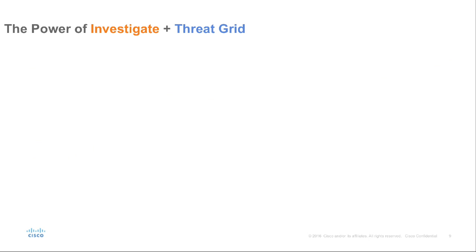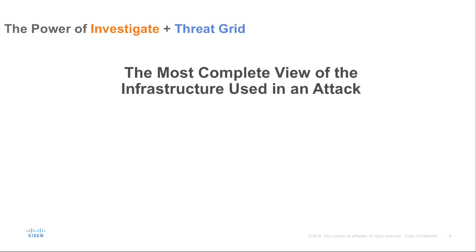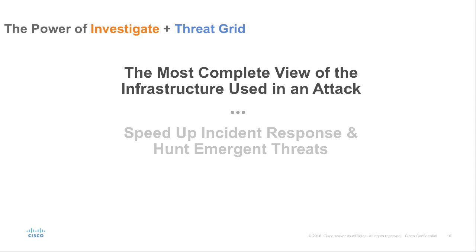To recap, by using both Investigate and ThreatGrid together, you'll be able to gain the most complete view of the infrastructure used in an attack — from Investigate's Internet Infrastructure Intelligence combined with ThreatGrid's malware file intelligence. With this full visibility, you can quickly determine if a domain or file is malicious and interactively pivot on data points to uncover additional IOCs, speed up incident response, and hunt emergent threats.